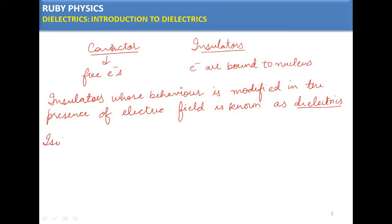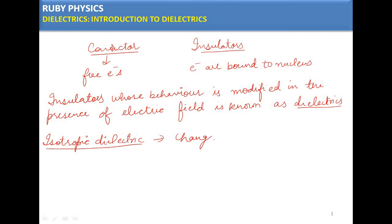You should know what is meant by isotropic dielectric. An isotropic dielectric is one in which, when kept in an external electric field, the change in the behavior of the dielectric is independent of the direction of the applied field. The change in the dielectric is independent of the direction of the applied field.